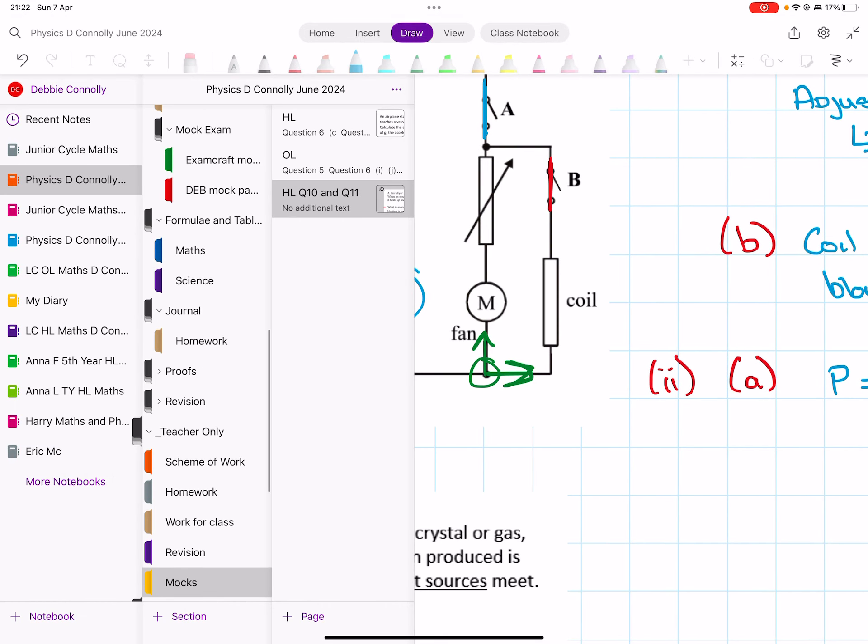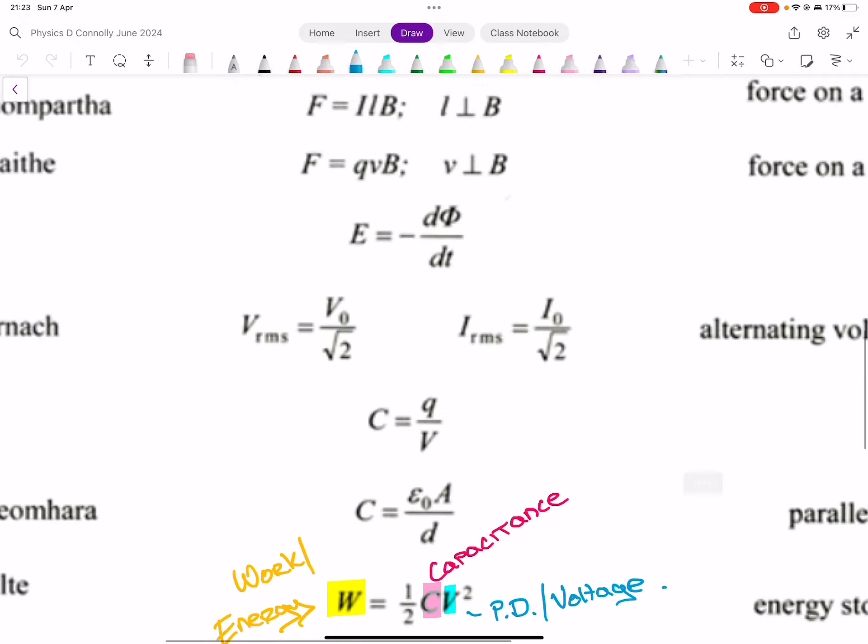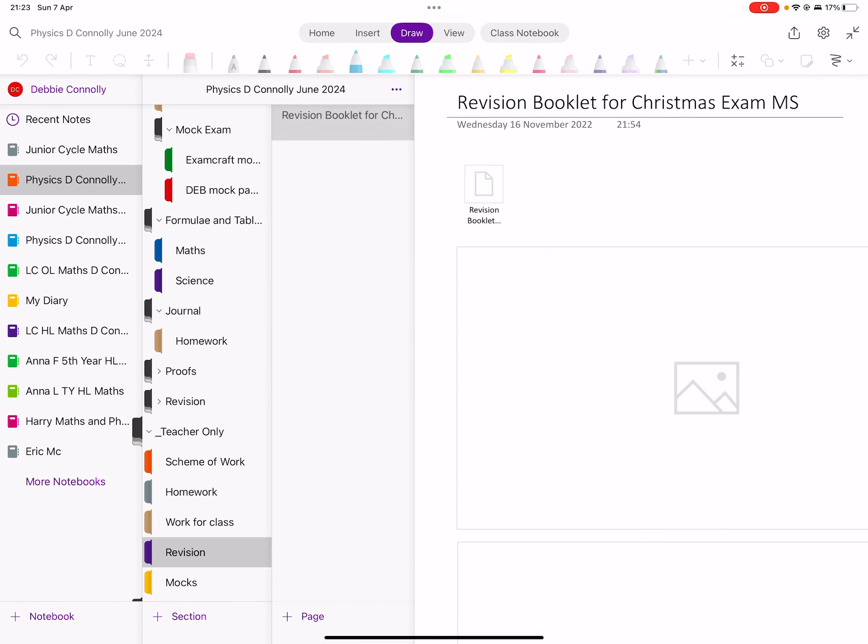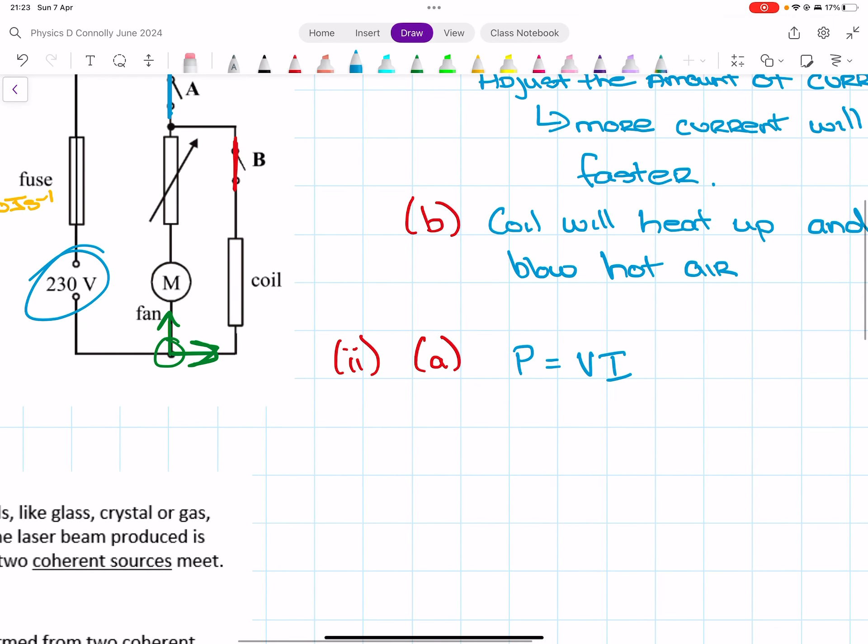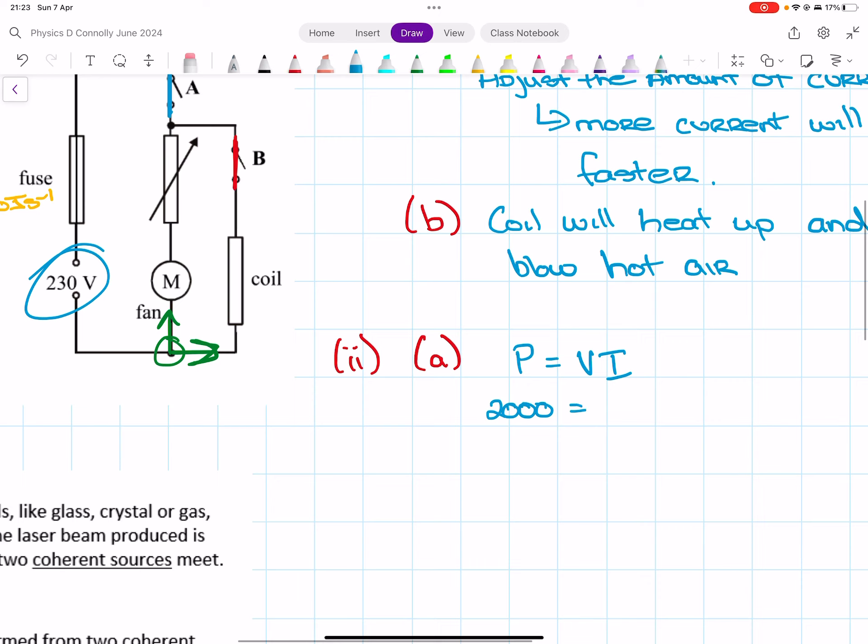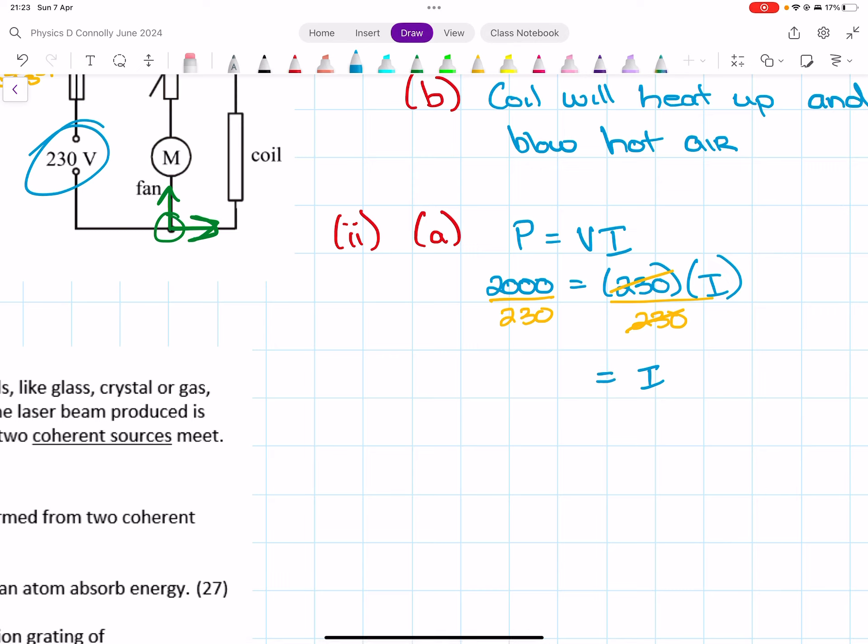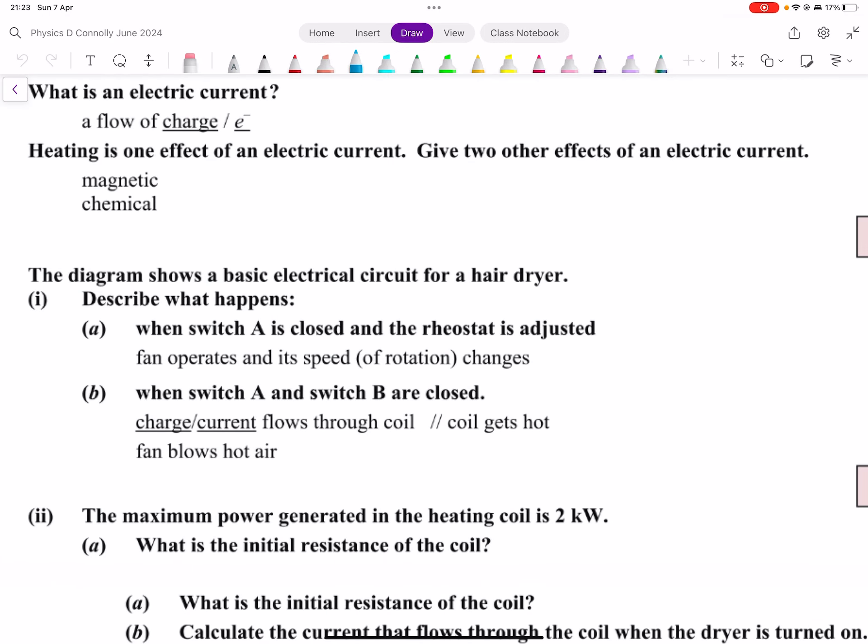P equals VI for power. Okay, so the power is 2000, the voltage is 230 volts. 2000 equals 230 times I. We divide by 230, and we get I equals 8.7 amps for current.